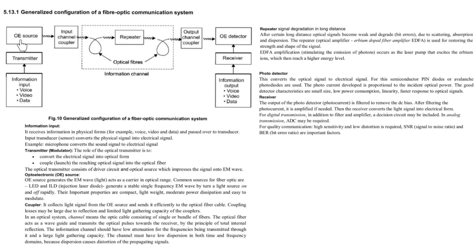The next stage is OE source, which is optoelectronic source. The optoelectronic source generates the electromagnetic wave, which is nothing but light. Common source for optical fiber are LED and ILD, which is injection laser diode. LED as well as ILD generate a stable signal frequency electromagnetic wave by turn a light source on and off rapidly. The important property of LED and ILED are they are compact, lightweight, moderate power dissipation and easy to modulate.